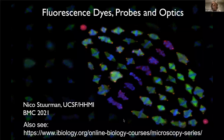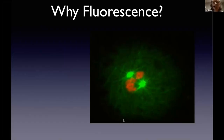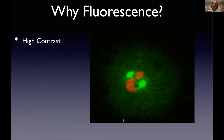iBiology is the search term that should always get you there. So why do we like fluorescence? Well, one of the aspects is that in normal transmitted light microscopy we really put a lot of effort into generating contrast. When you just shine light through something, you don't see anything. That's why we have phase contrast and DIC.